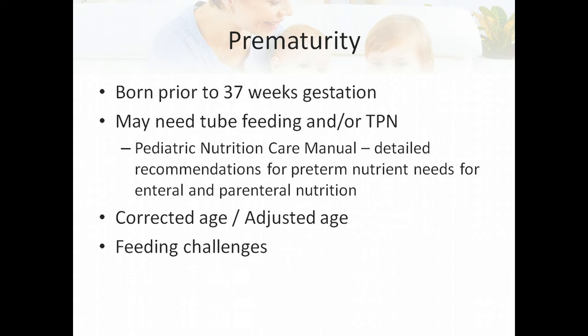For premature babies, generally through the first year we use a corrected age or adjusted age. Essentially, this considers their age from when they were expected to be born — their estimated due date. For example, if a baby is one month old by the calendar from when they were born, but they were a month early, then really they're just starting at zero in terms of growth and development. We adjust the age based on when their due date was.